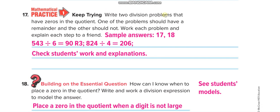Write two division problems that have zeros in the quotient. We wrote two division problems that have zero in the quotient. One of the problems should have a remainder. See, this first one has the remainder, and the other should not. So the other doesn't have.